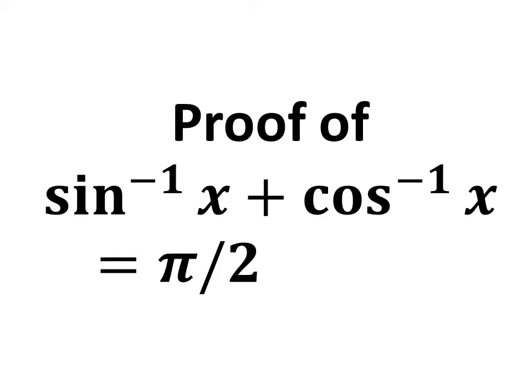It can also be stated as: prove arc sine of x plus arc cosine of x equals π/2, as inverse sine is also known as arc sine and inverse cosine is also known as arc cosine.